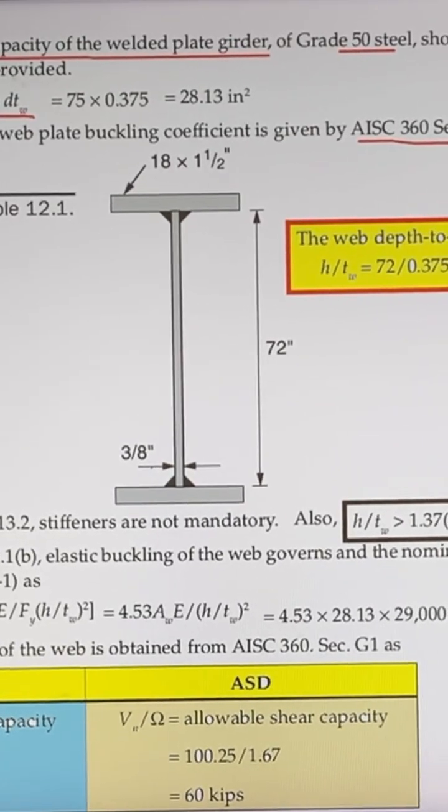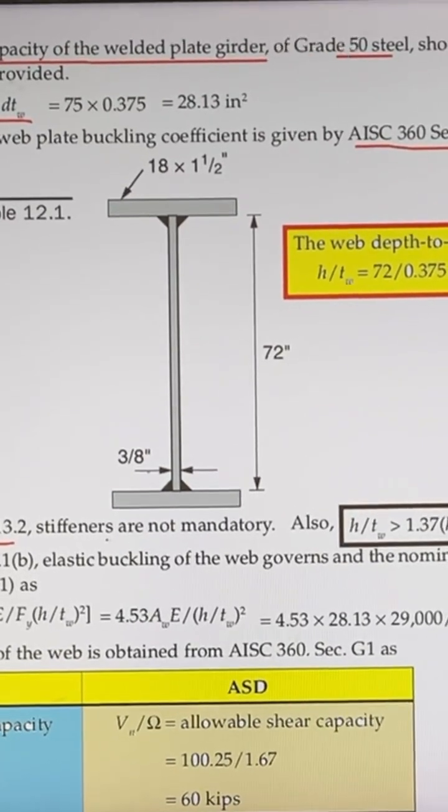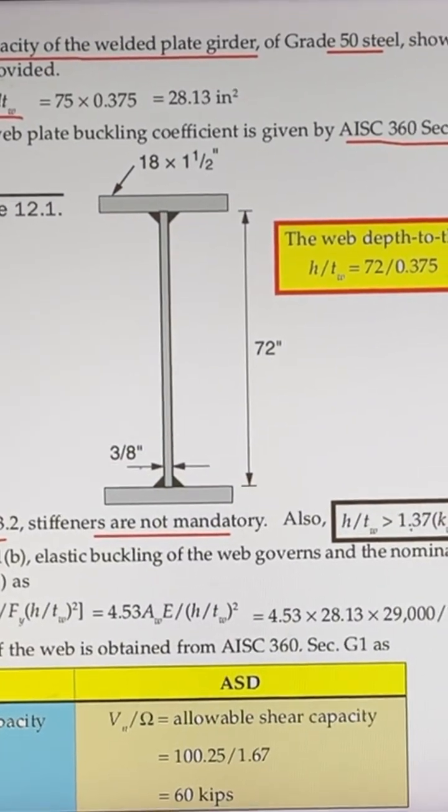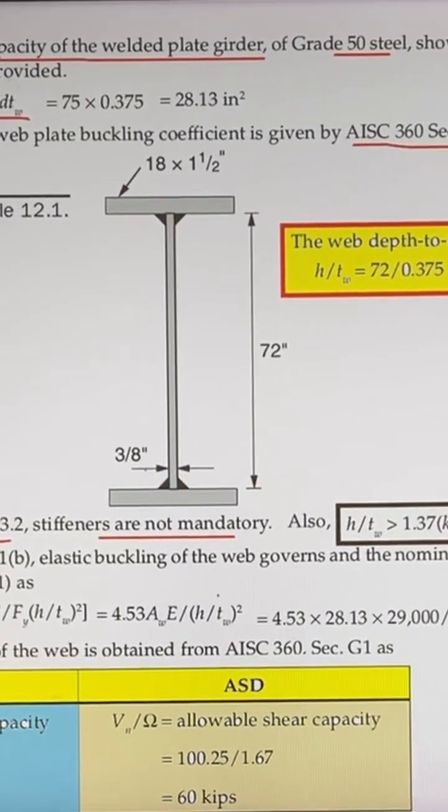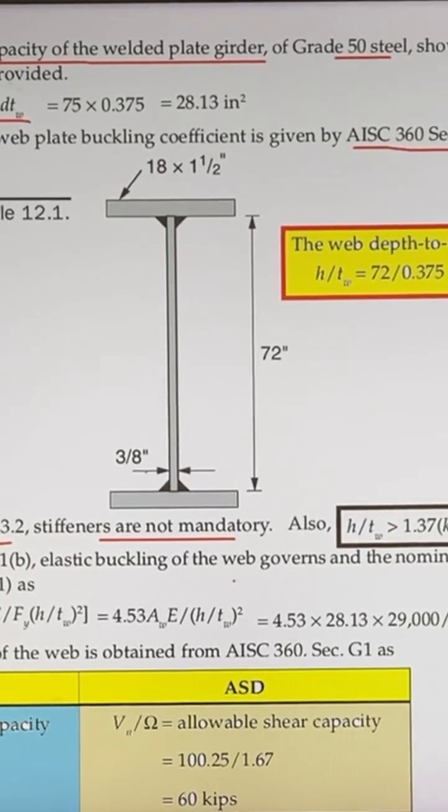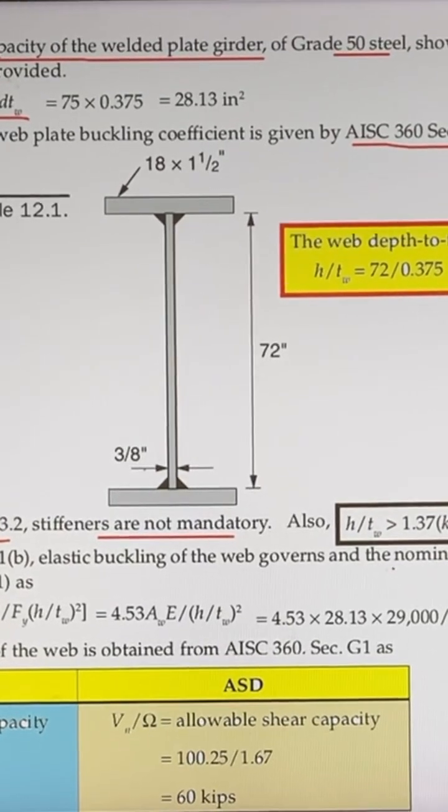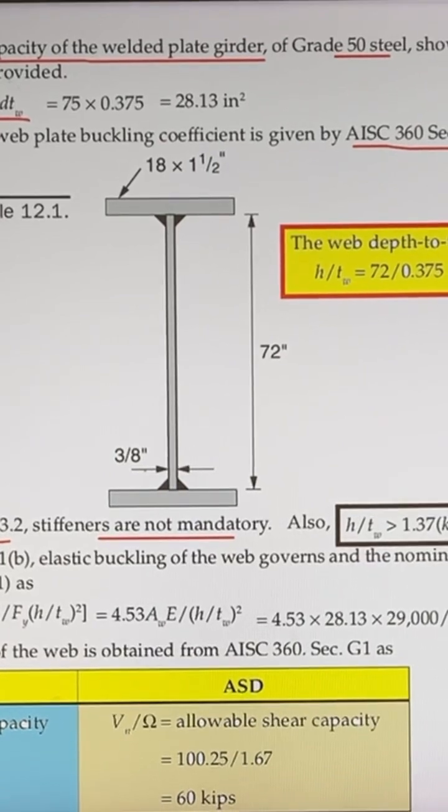Hence, from AISC 360, stiffeners are not mandatory. Also, h/tw is greater than 1.37, hence elastic buckling of the web governs and the nominal shear strength is given by 0.6 Fy Aw times Cv.